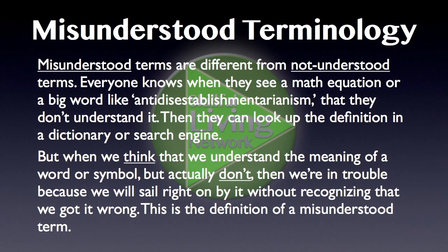Misunderstood terms are different from not understood terms. Everyone knows when they see a math equation or a big word like anti-disestablishmentarianism that they don't understand it — then they can look up the definition in a dictionary or search engine. But when we think that we understand the meaning of a word or symbol, but actually don't, then we're in trouble because we will sail right on by it without recognizing that we got it wrong. This is the definition of a misunderstood term.